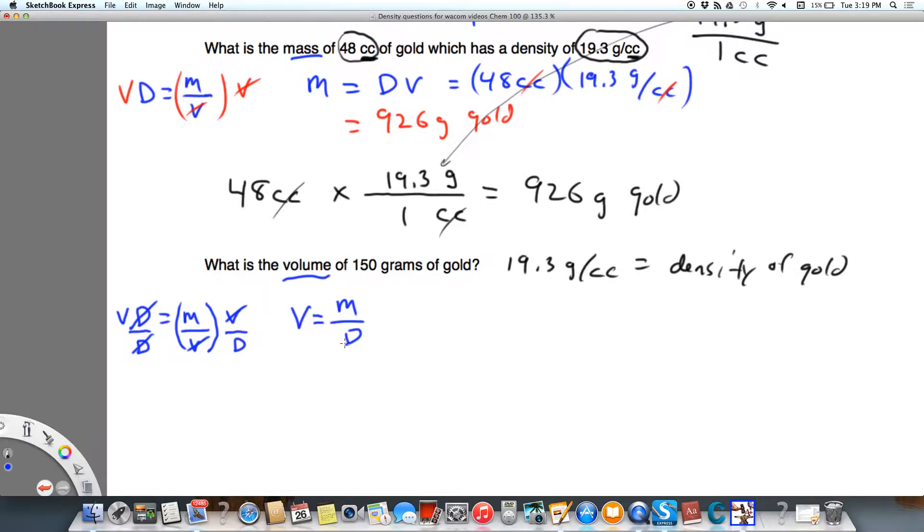So in this case, if I take 150 grams and I divide it by 19.3 grams per cc, grams cancel, I have 1 over cc's on the bottom, so that's the same as cc's on top. So 150 divided by 19.33 equals 7.77 cc of gold.